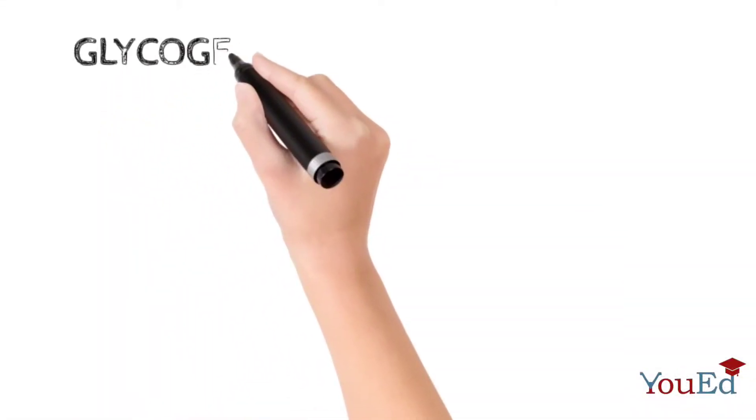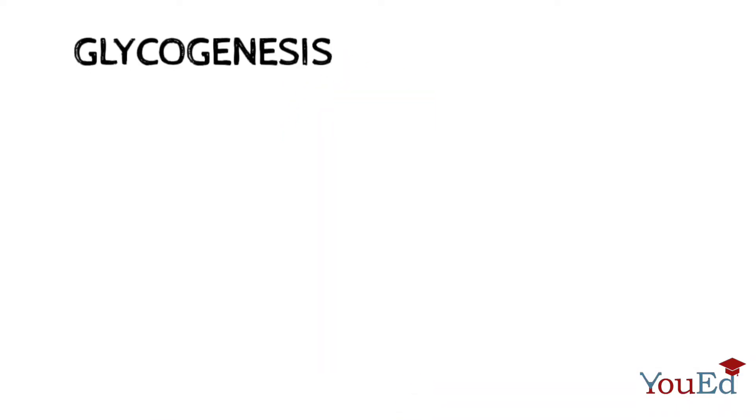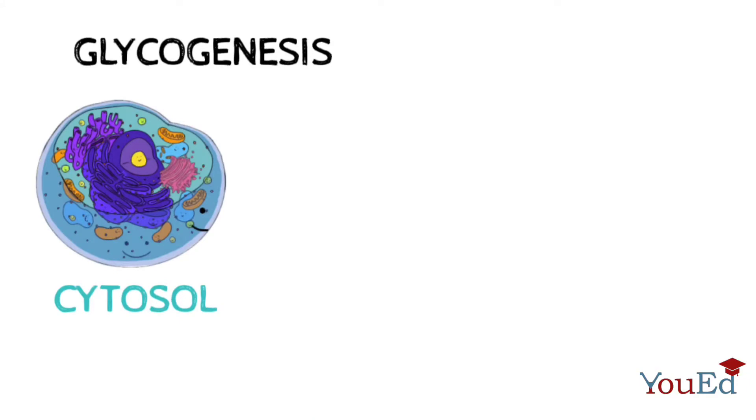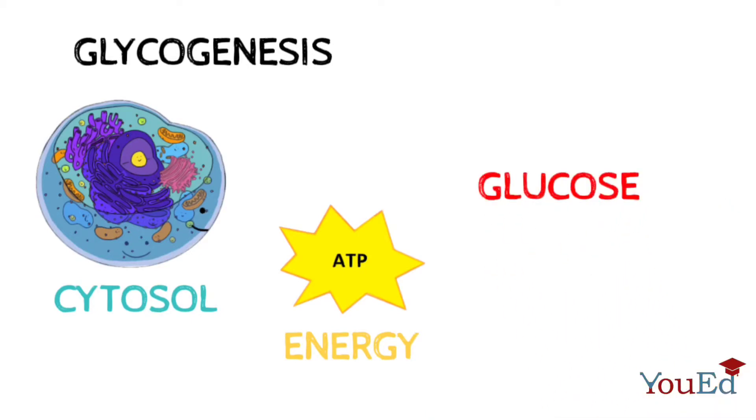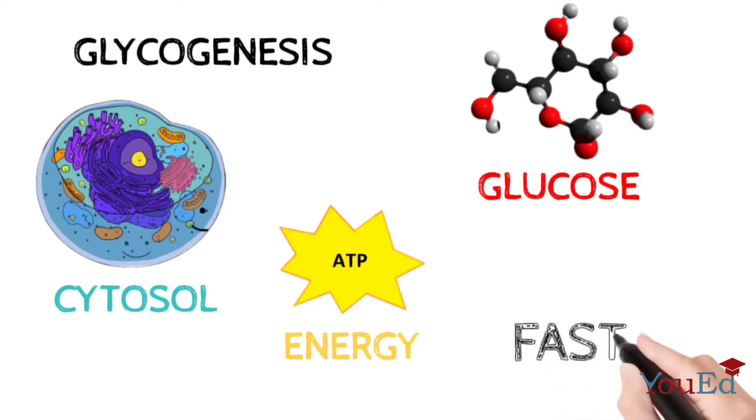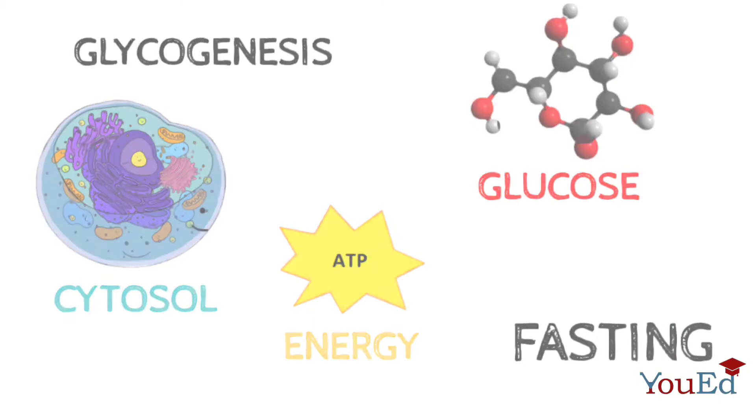Welcome to UWED. Today we will be discussing glycogenesis. As we know, glucose is broken down in the cytosol of the cell to form energy for physiological functions. After the production of required amount of energy, the excess glucose in the body is converted to be used later during the fasting stages.